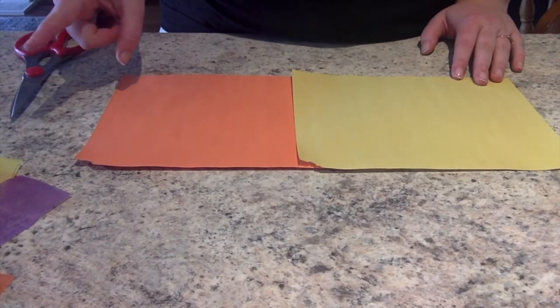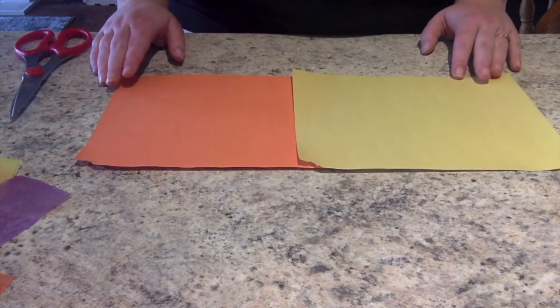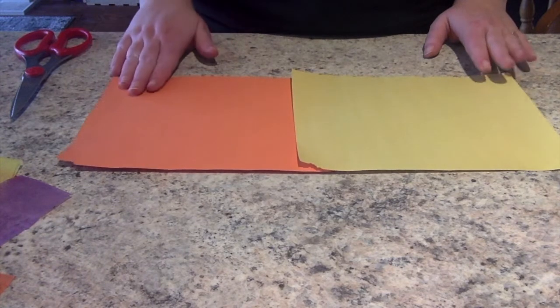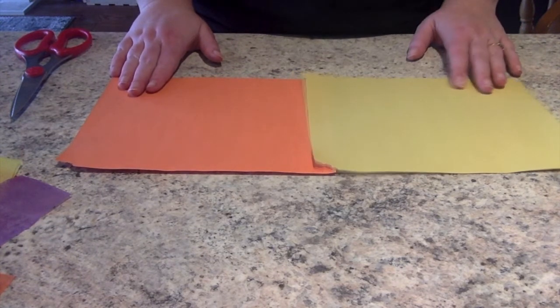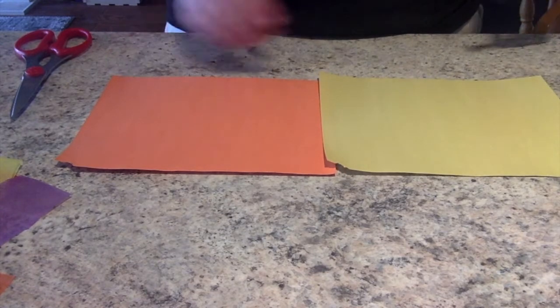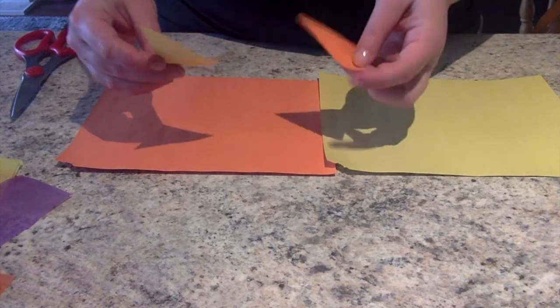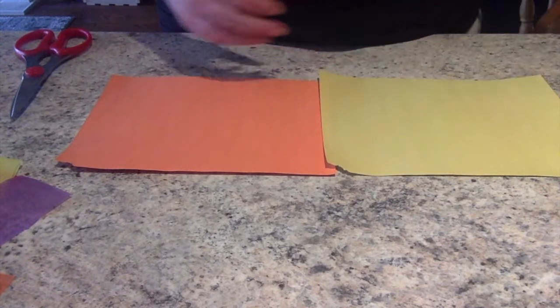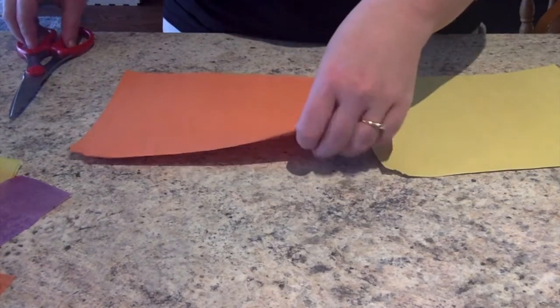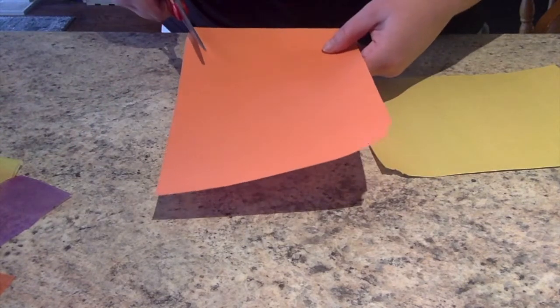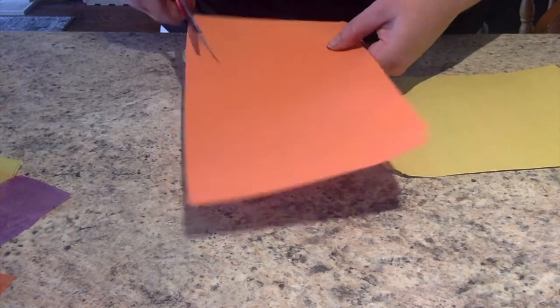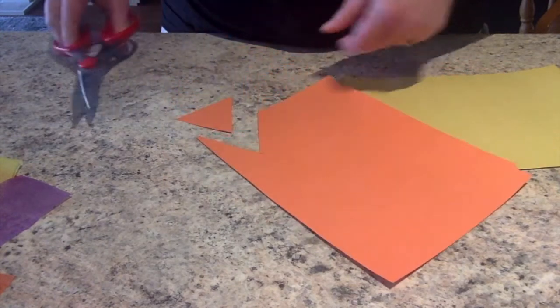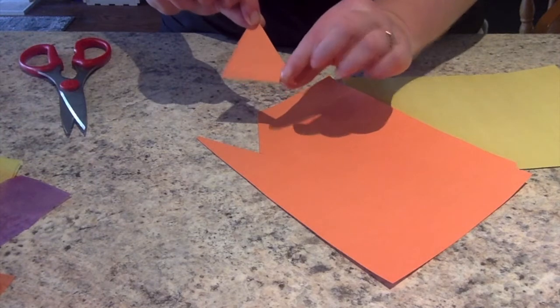When we finished cutting up our strips of tissue paper for the rainbow, we are going to work on the rays of our sunshine. So you're going to want to grab your orange and yellow construction paper. And we are going to spend some time cutting out triangles of different sizes to go around the outside of our paper plate. So you're just going to take your piece of construction paper and start by making one diagonal snip up and then another one the other way.